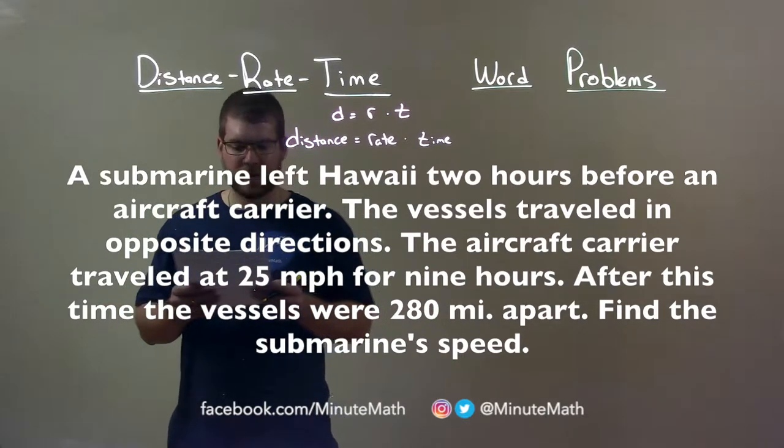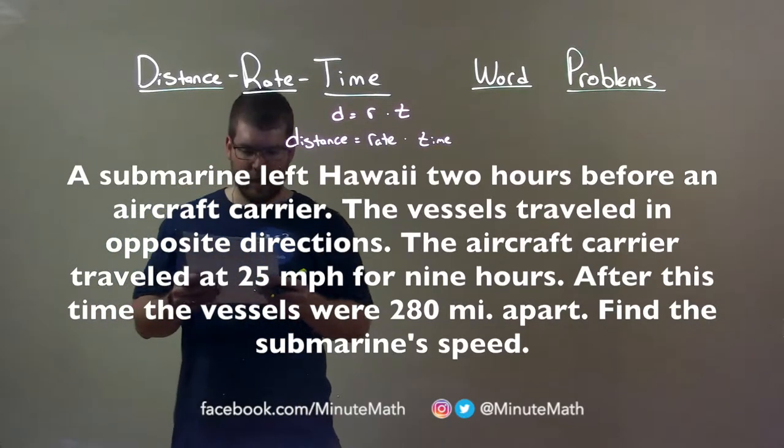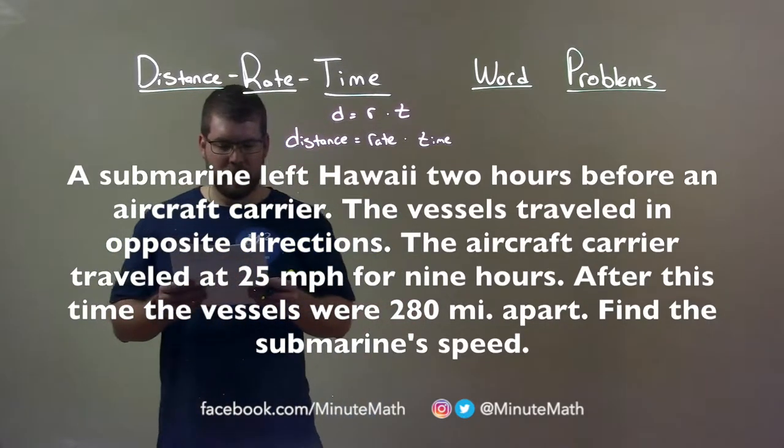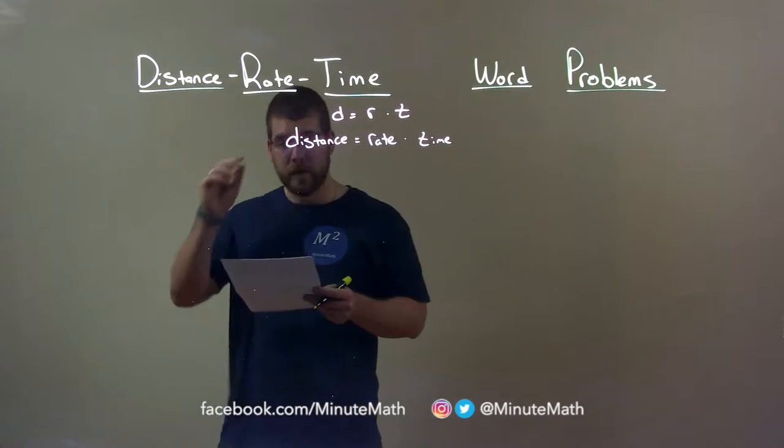The aircraft carrier traveled at 25 miles per hour for nine hours. After this time, the vessels were 280 miles apart. Find the submarine's speed.